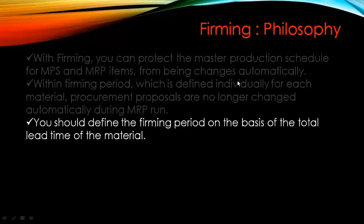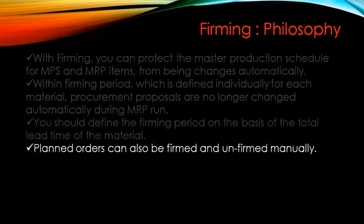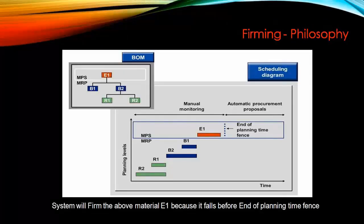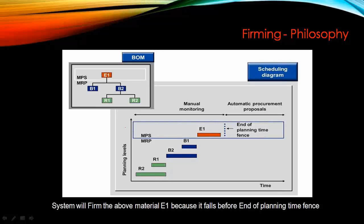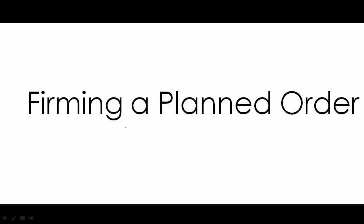You should define the firming period on the basis of the total lead time of the material — we'll talk about this later. Planned orders can also be firmed and unfirmed manually by checking or unchecking this box. There is also a thing called planning time fence, which you can maintain in the material master — any material within the planning time fence will automatically be firmed. We'll talk about this topic in a moment.